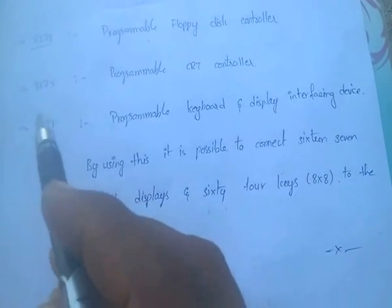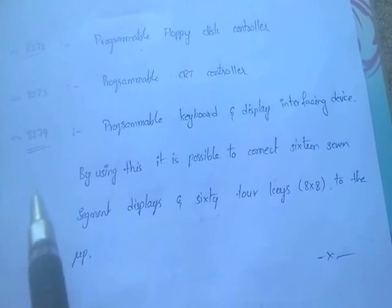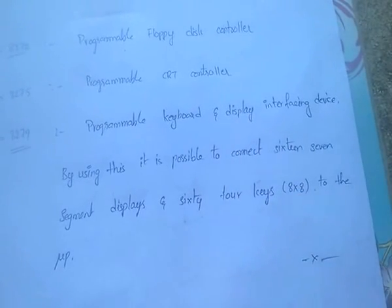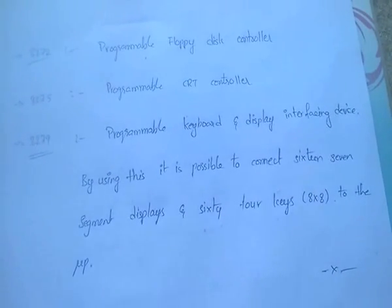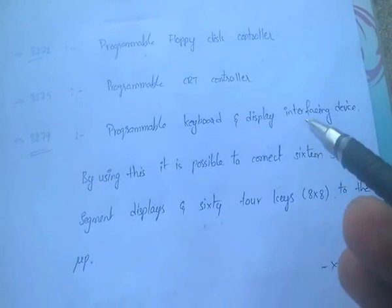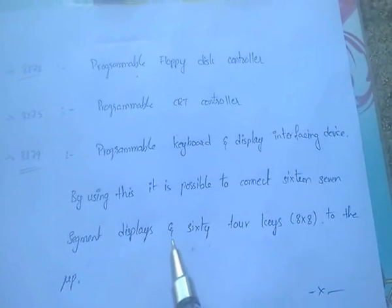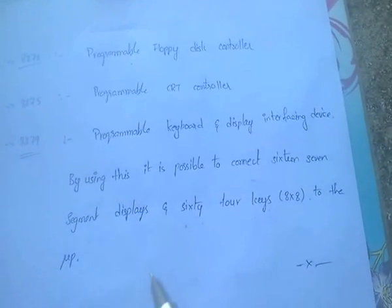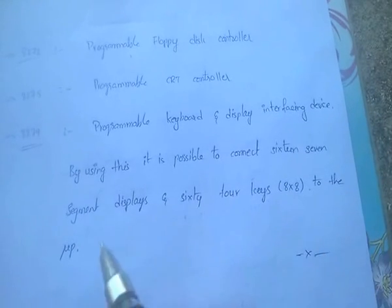8279 is a programmable keyboard and display interfacing device. By using this, it is possible to connect 64 seven-segment displays and 64 keys to the microprocessor.